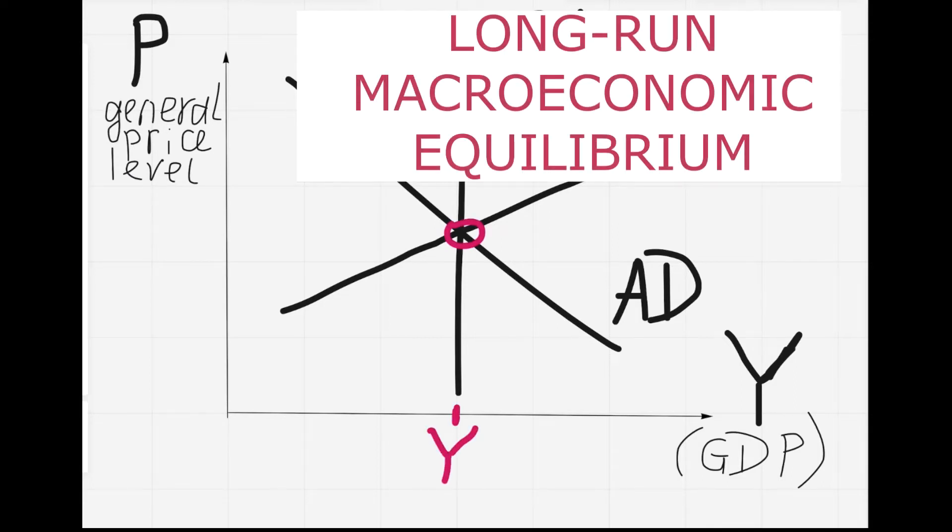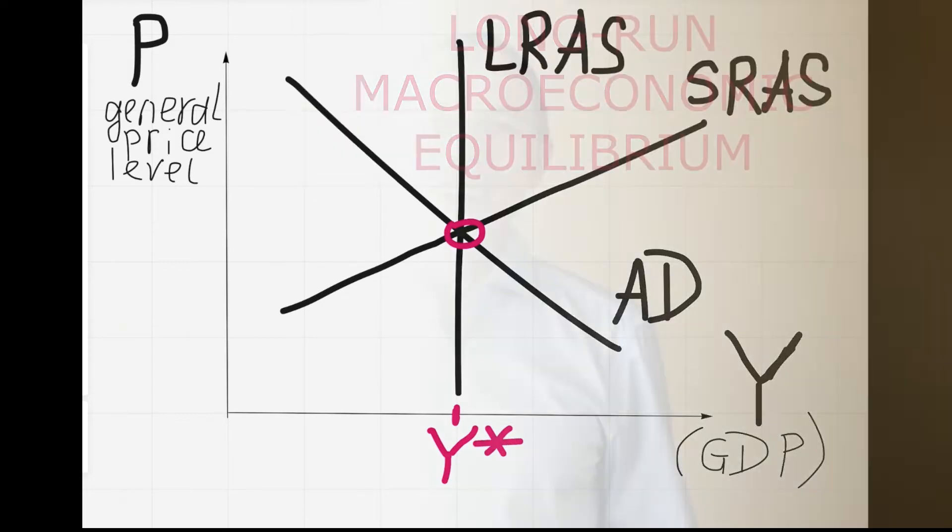In the long-run equilibrium, the economy produces its potential output. Imagine you're taking an exam — you're in an examination room, reading a problem. That problem will give you an event, and that event will shift one of the curves. Your job is to read the problem, see the event, and figure out which curve to shift.